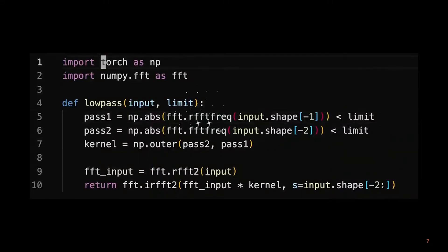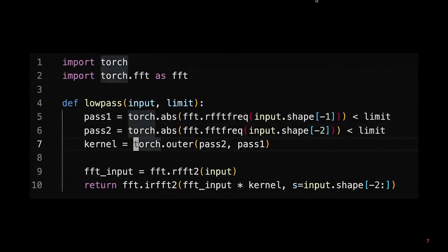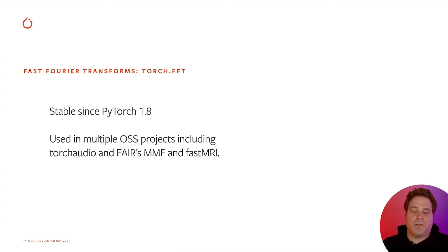Here, a low-pass filter is converted to PyTorch just by replacing the NP namespace with the Torch namespace. The Torch.FFT module has been stable since PyTorch 1.8, and since then it's already seen use in multiple open source projects, including Torch Audio and Facebook Research's MMF and FastMRI projects.